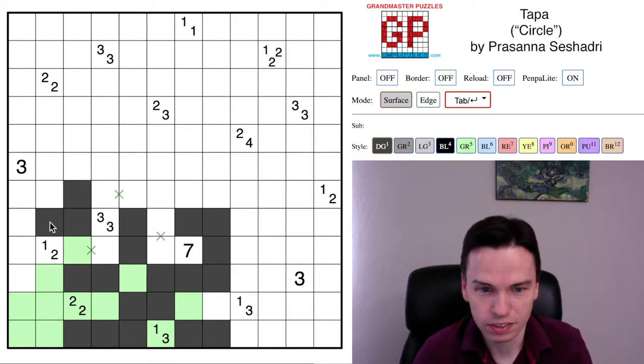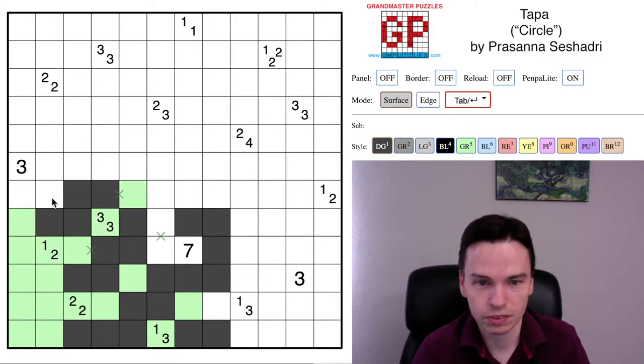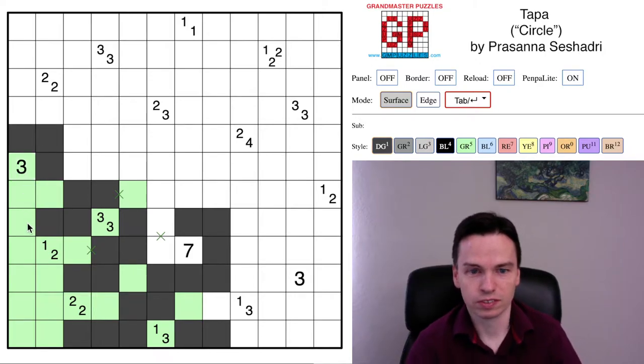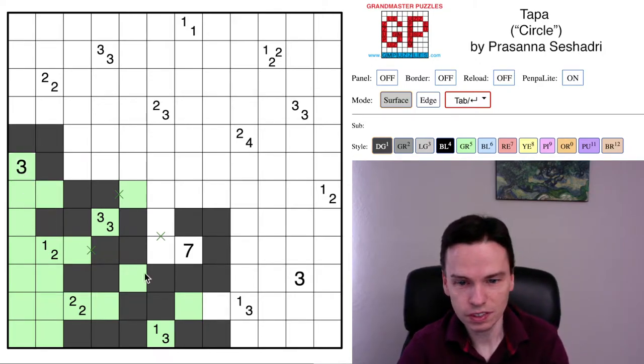This 1-2 clue can't take this cell, so it must take this and finishes it out. That actually organizes what the 3-3 will do. This cell is unused for the 2x2 rule, which puts it in for this 3 clue. And we've got the start.